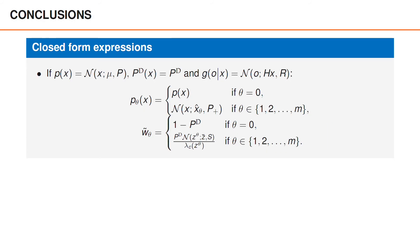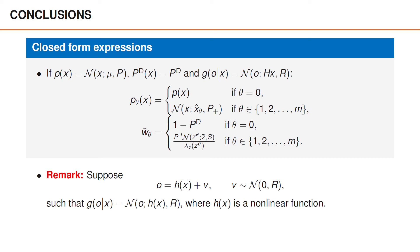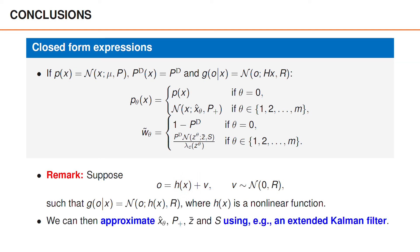Under the assumption that the prior is Gaussian, pd is constant, and g is linear and Gaussian, we have obtained simple expressions. The density Pθ is either not updated at all or obtained using a simple Kalman filter update using the measurement z-data. The unnormalized weight is either 1-pd or pd times the predicted likelihood divided by lambda c of z-data. All of the parameters z-bar, S, x-hat and p-plus are obtained from a simple Kalman filter. Before we finish, I'd like to make an important remark: it is common to model the object detections as a nonlinear function f of x plus some Gaussian noise v. Even though this prevents us from using a standard Kalman filter, we can still use an extended Kalman filter or an unscented Kalman filter to approximate x-hat-theta, p-plus, z-bar and S. This enables us to use the derived equations also for nonlinear models.